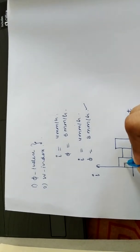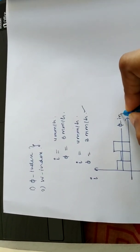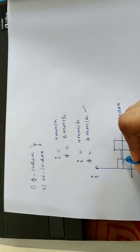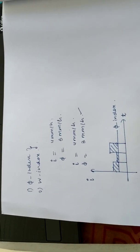Phi index is that value of rainfall intensity or that value of rainfall above which whatever rainfall will come will be equal to runoff. This shaded area corresponds to runoff.